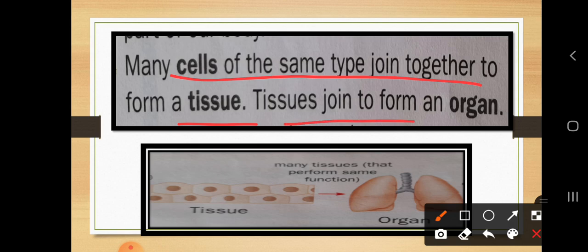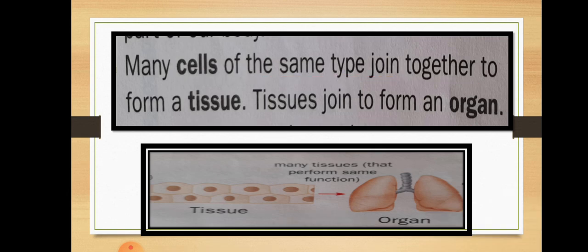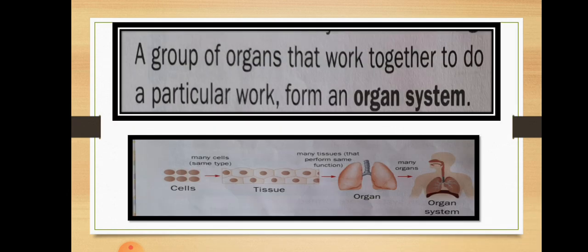The group of cells is called tissues. These tissues join together to form an organ — any kind of organ in our body, may be lungs, may be pancreas, or any other organ that helps us carry out functions in our day-to-day life. Now, what are the organ systems?